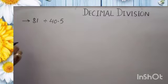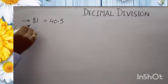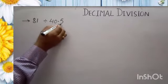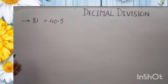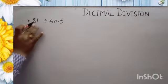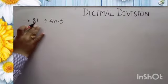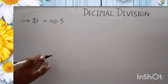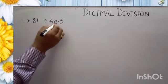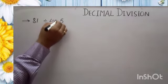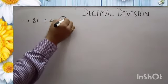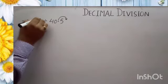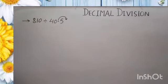One more question: 81 divided by 40.5. Again, in this question the dividend has no decimal but the divisor has a decimal. So remove the decimal from the divisor — move the decimal to the right side one place and put 10 in your dividend.